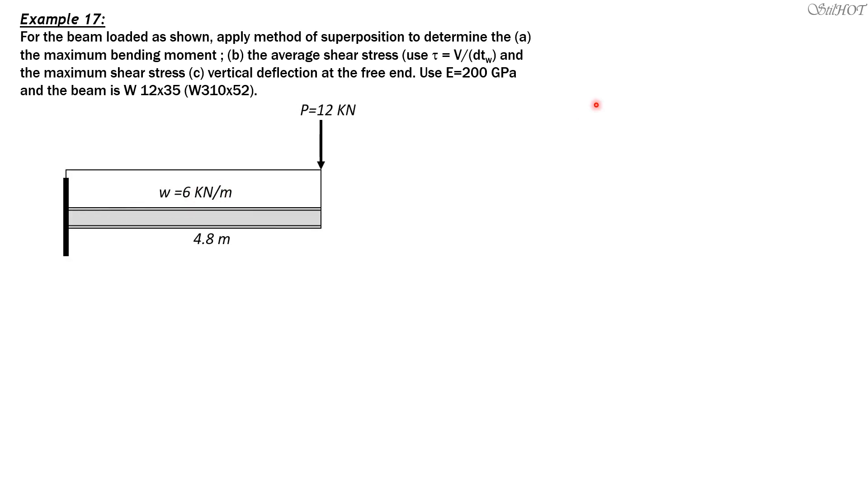These are the properties of the section. The uniform weight of the beam is 52 kilograms per meter times 9.81 divided by 1000 to make it kilonewtons per meter. So the uniform weight is 0.51 kilonewtons per meter. Therefore the beam is loaded with a total uniform load of 6 plus 0.51 equals 6.51 kilonewtons per meter.